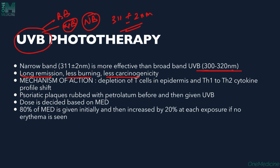The mechanism of action of phototherapy is that it depletes the T cells seen in the epidermis, and there is conversion from Th1 to Th2 cytokine profile. Psoriasis occurs due to an inflammatory T-cell response, which is depleted by phototherapy. The Th1 cytokine profile is shifted to Th2, helping reduce the inflammatory response and symptoms of psoriasis.